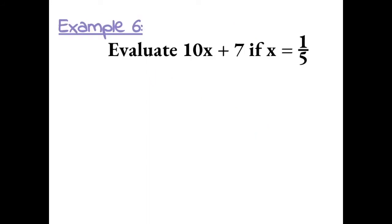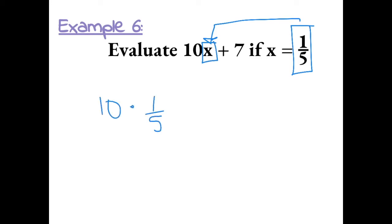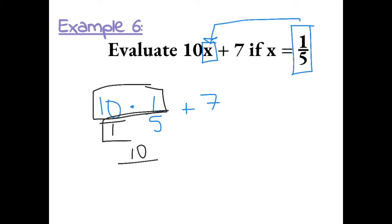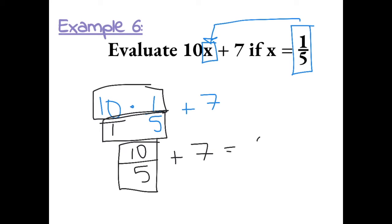Evaluate 10x plus 7 if x equals 1 fifth. So I need to plug in 1 fifth for x and multiply it with 10. This becomes 10 times 1 fifth plus 7. Order of operations says we need to do multiplication before addition. So I can put a 1 underneath my 10 to multiply my fractions. 10 times 1 is 10, and 1 times 5 is 5. Bring down my plus 7. 10 over 5 can be simplified to 2, and then plus 7 gives us a value of 9.